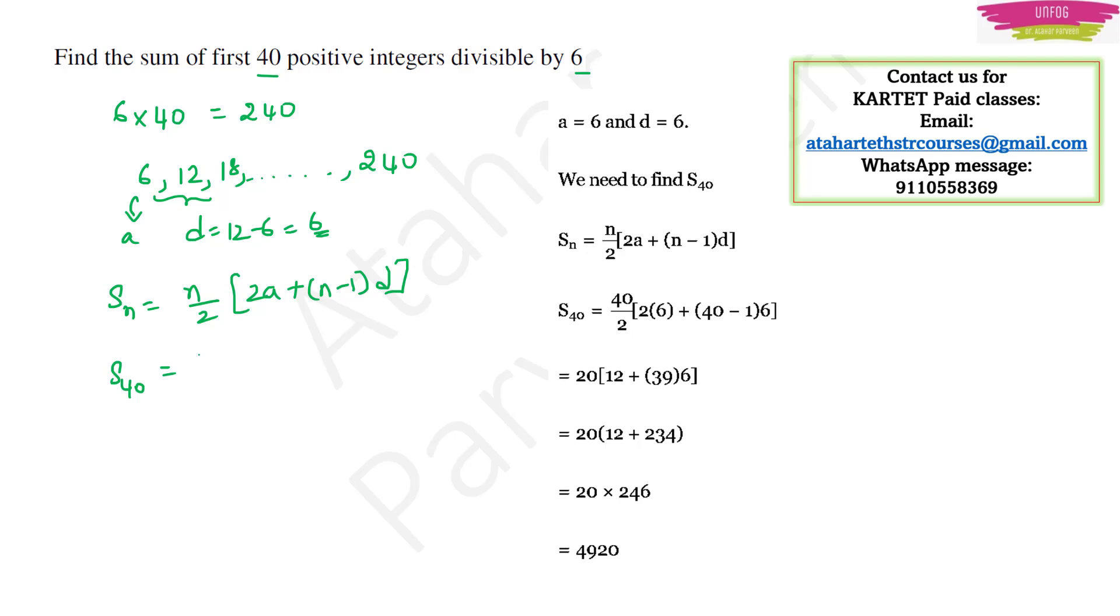S40 will be equal to what is n? 40 by 2, 2 into 6 plus n is 40 minus 1 into 6. So this will give 20, here you will have 20, here you will have 12, here you will have 39 into 6 or 20 into 12 plus 234 and 20 into 246. If you multiply,